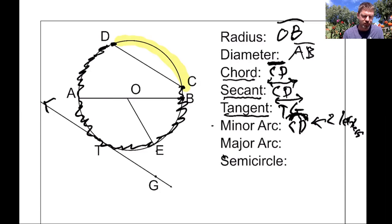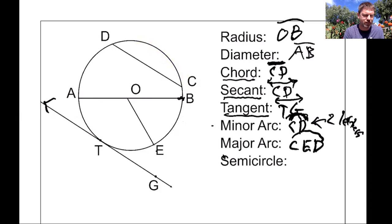Because then I can see that that means it's the arc that starts at C, goes through E, and then hits D. That'll have to be this one. So a major arc is going to require three letters.